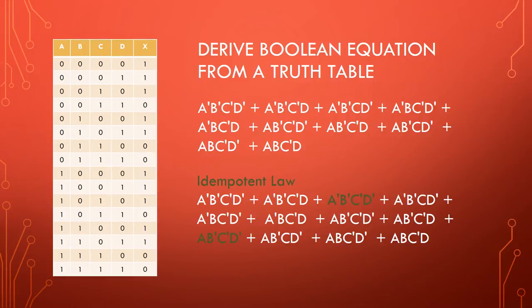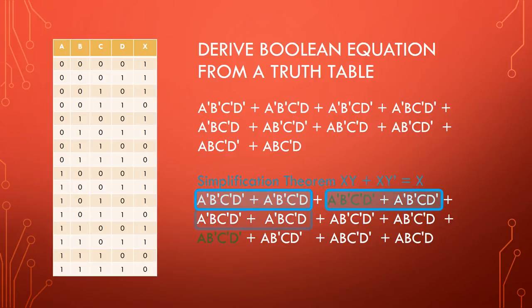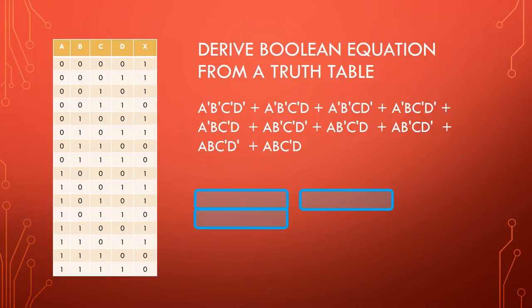While complete, the equation will do us far more good reduced. To begin the reduction process, we apply the Idempotence Law by duplicating A0, B0, C0, D0 terms in order to successfully apply the simplification theorems. We applied the simplification theorem XY plus XY' equals X to minterm pairs with only one input difference. We reapplied the same simplification theorem two more times in order to reach a fully reduced equation.